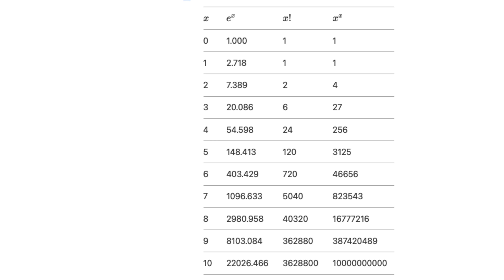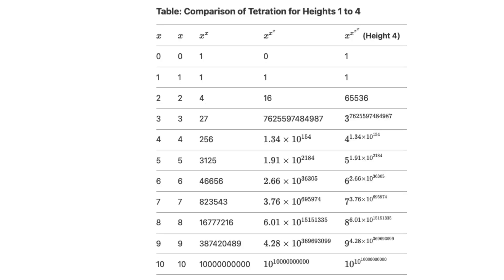As you can see from the table, the values for the tetration function of height 3 and 4 become huge, even for small values of x.